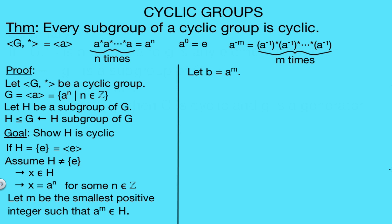Let the letter B represent the element A to the M. We're going to claim that our subgroup H can actually be generated by this element B. If we can show that this is true, then we know that our subgroup H is cyclic because we found a generator. So the rest of this proof will be proving that H is generated by this element B. In order to prove this, we need to show that any element in H can be written as a power of B.